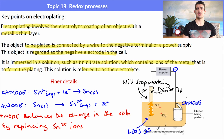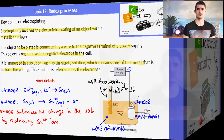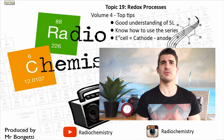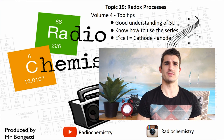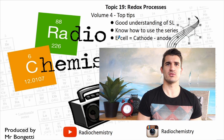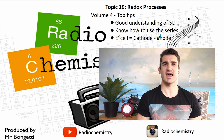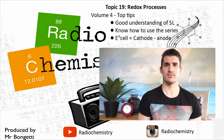If given data, note that the anode loses mass and the cathode gains mass — this can be used to calculate charge, current, and time needed for electrolysis. Top tips for Topic 19 Redox Volume 4: make sure you have a good understanding of standard level content, know how to use the electrochemical series, and remember E°cell = E°cathode − E°anode. Thanks for watching — drop a like, subscribe for more, and see you next time.